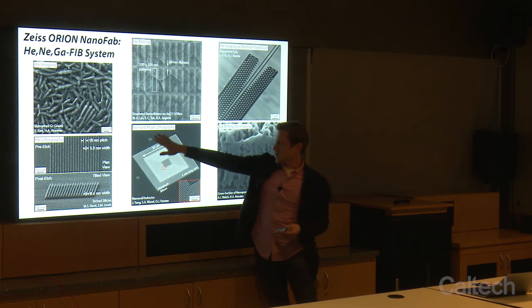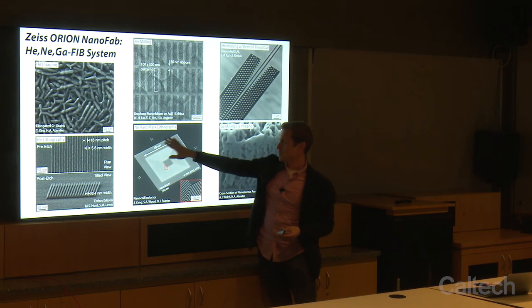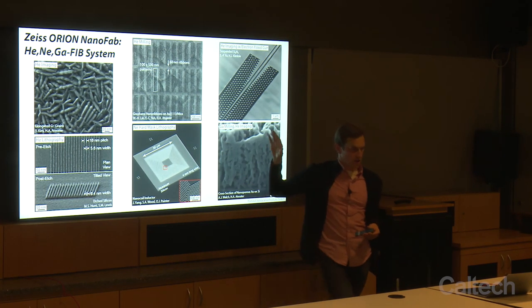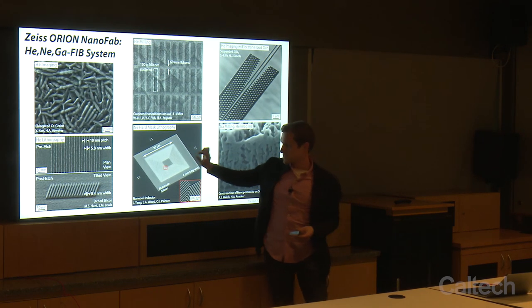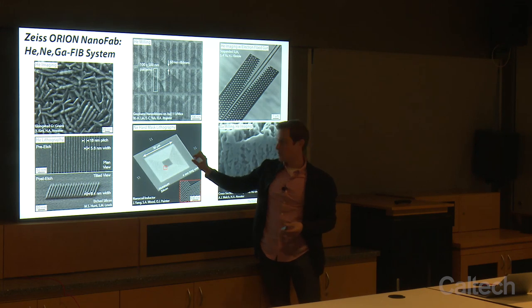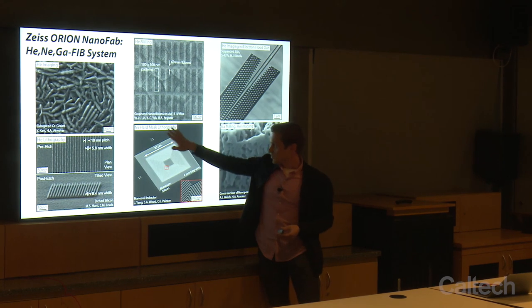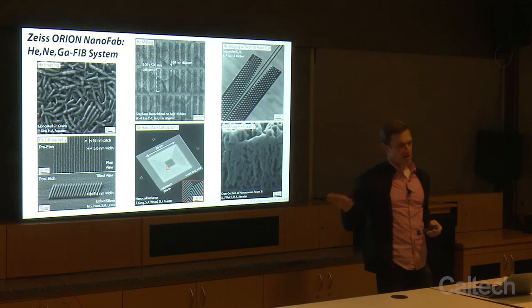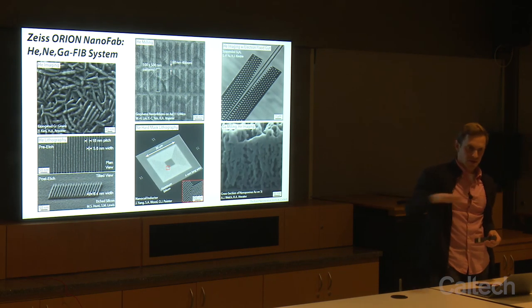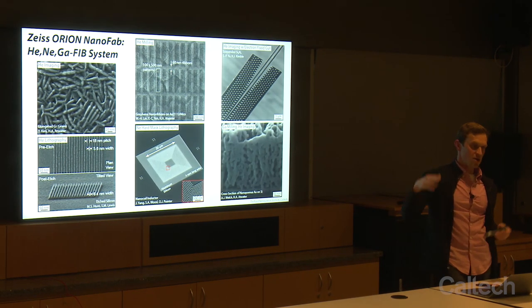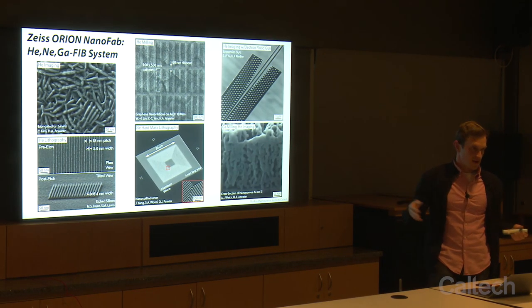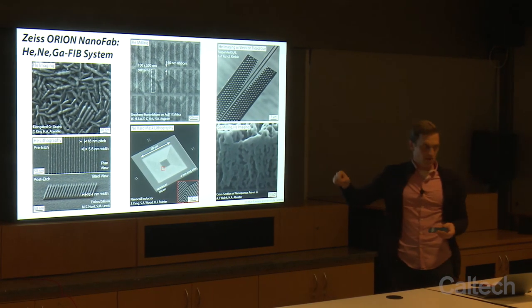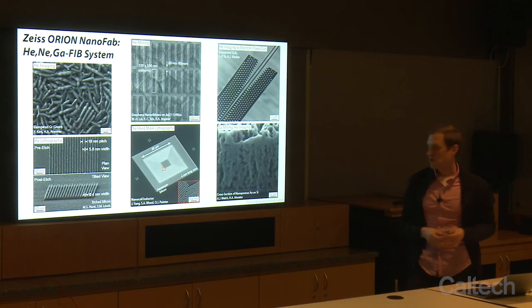Here we're using the neon focused ion beam, not to remove material directly all the way through. This is a 60 nanometer aluminum pad. Rather, we're doing a form of hard mask lithography. I'll show later how we can put a very thin layer of atomic layer deposited aluminum oxide, use that as a hard mask, and use neon to stencil that hard mask and then transfer the pattern.